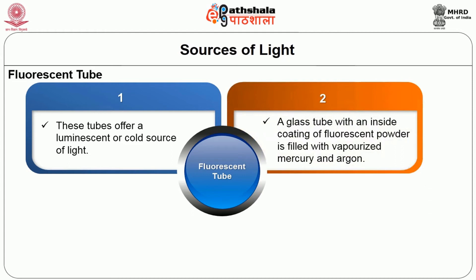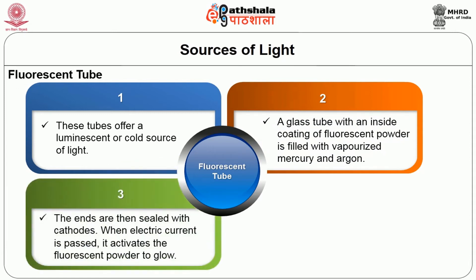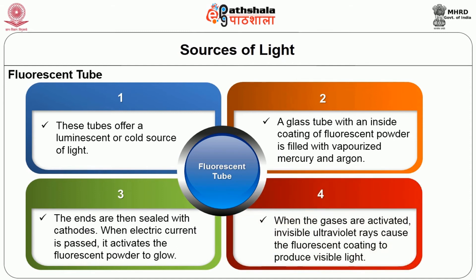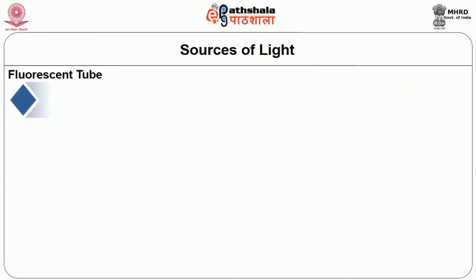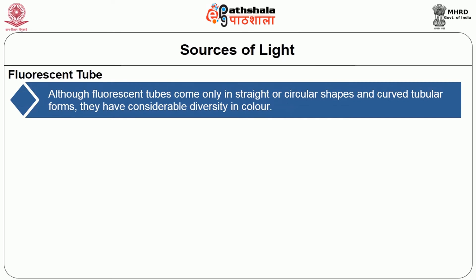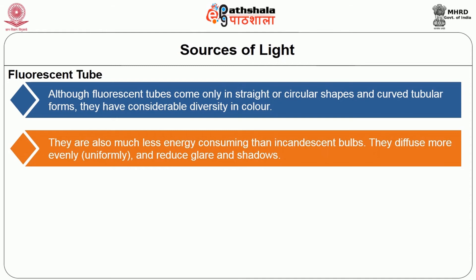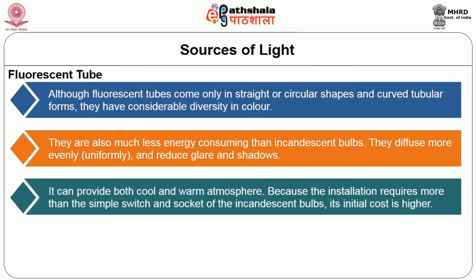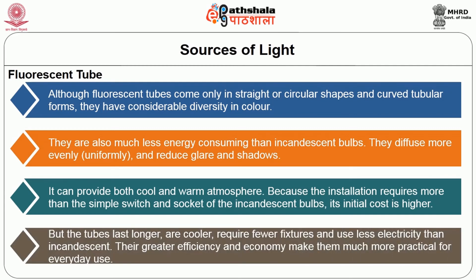Fluorescent tubes offer a luminescent or cold source of light. A glass tube with an inside coating of fluorescent powder is filled with vaporized mercury and argon, and the ends are sealed with cathodes. When electric current is passed, it activates the fluorescent powder to glow; when the gases are activated, invisible ultraviolet rays cause the fluorescent coating to produce visible light. Although fluorescent tubes come only in straight, circular or curved tubular shapes, they have considerable diversity in colour. They are much less energy consuming than incandescent bulbs, diffuse light more evenly and uniformly, and reduce glare and shadows. They can provide both cool and warm atmosphere. While initial installation cost is higher, the tubes last longer, require fewer fixtures and use less electricity than incandescent bulbs, making them much more practical for everyday use.